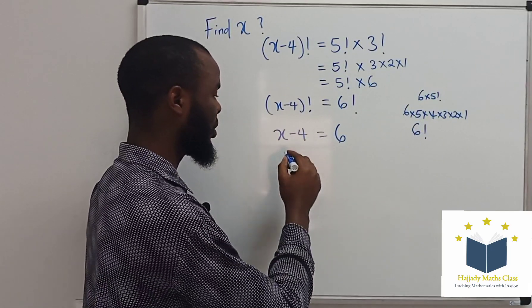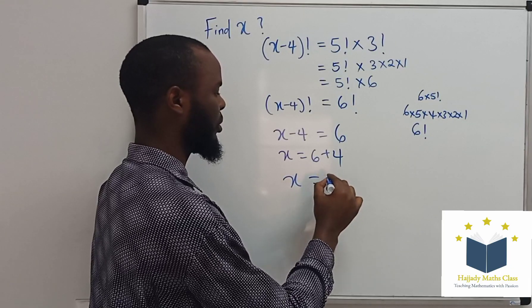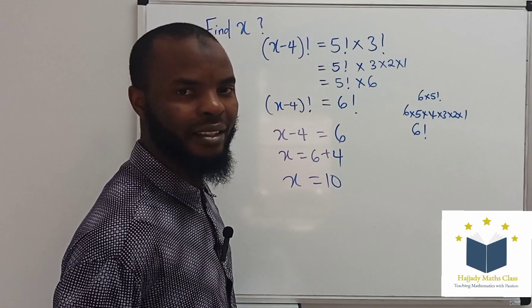And adding 4 to both sides, my x is going to be 6 plus 4, and my x is going to be 10. That's it.